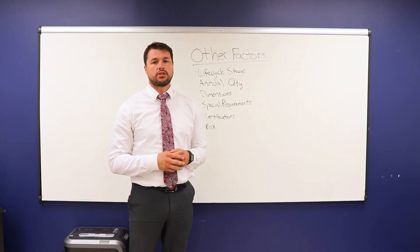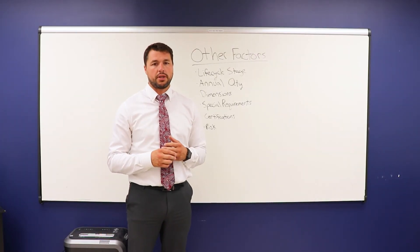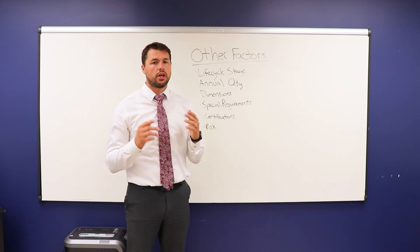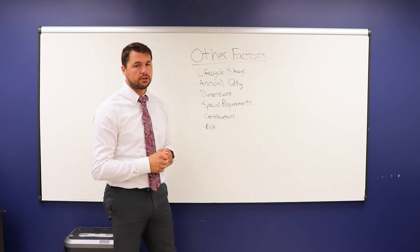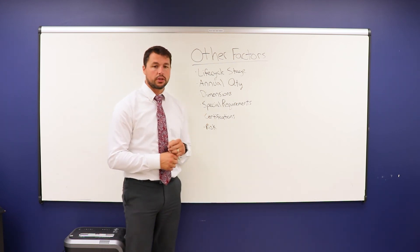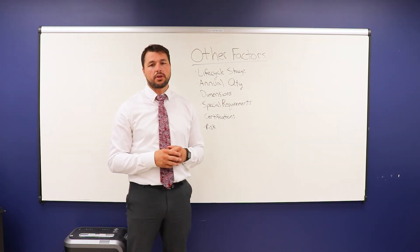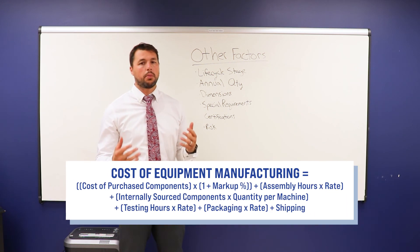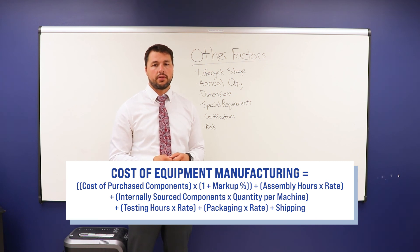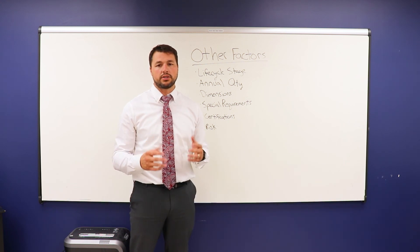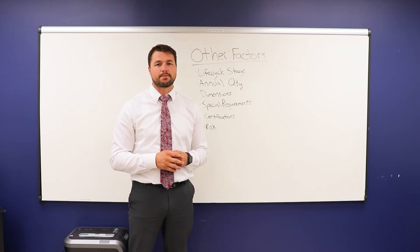Some other factors to consider when developing costs for contract manufacturing machinery are life cycle stage, annual quantities, physical dimensions, special requirements, certifications, and risk. I hope that answers some of the questions about how pricing is generated by a contract manufacturer. With this video and a calculator, you might even be able to generate your own estimates. Contact PICO today if you want an accurate price on your next machinery project.